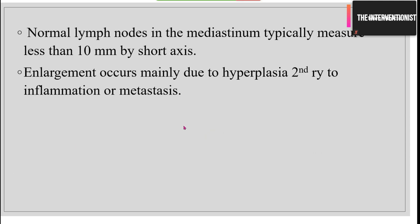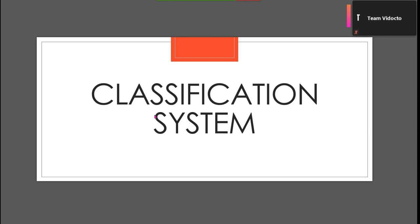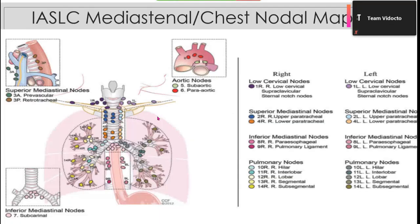Briefly about normal lymph node size: the old dictum is a short axis of less than 10 mm is considered normal. However, this is not always the same in oncology — you can get a malignant lymph node with less than 10 mm short axis very often. Enlargement occurs mainly due to hyperplasia secondary to either inflammation or metastasis. Now, onto the IASLC mediastinal or chest nodal map classification system.